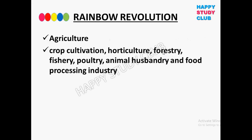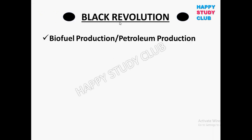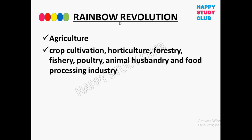The Red Revolution is for meat and tomato production. The Onion Revolution is for onion production, pharmaceuticals, and prawn production. The Rainbow Revolution is the overall revolution — all the revolutions taken together in an integrated manner is known as the Rainbow Revolution. It covers crop cultivation, horticulture, forestry, fishery, poultry, animal husbandry, and food processing industries.